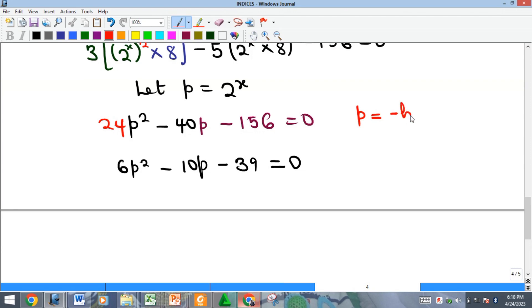The formula says that p is equal to negative b plus or minus square root of b squared minus 4ac over 2a. We need to get our a, b, c. Our a is 6, our b is negative 10, and our c is negative 39.